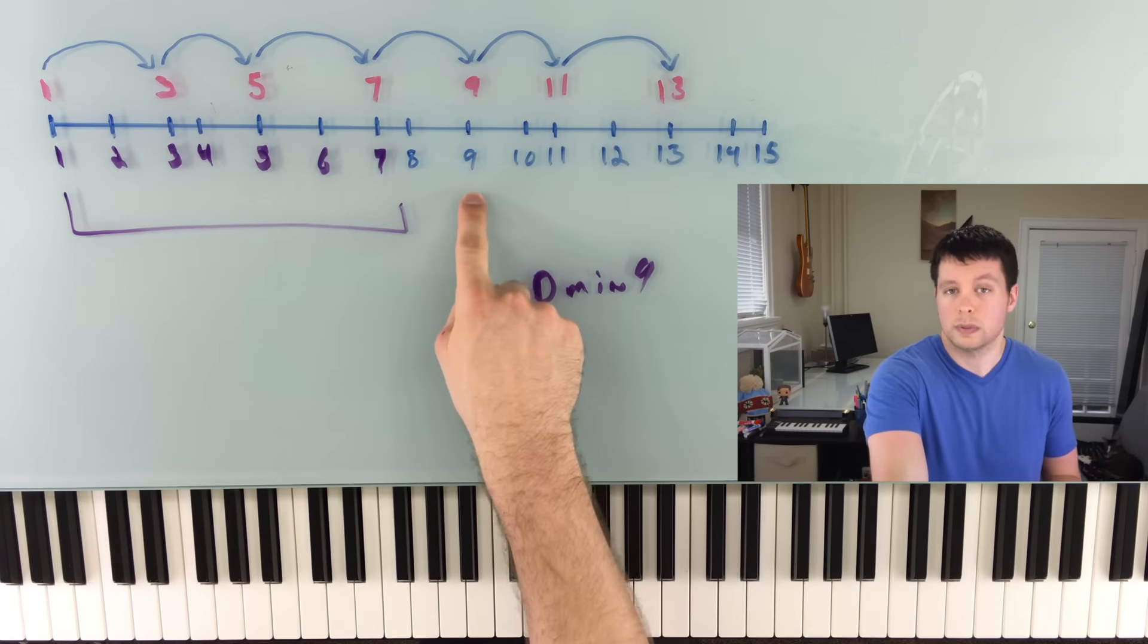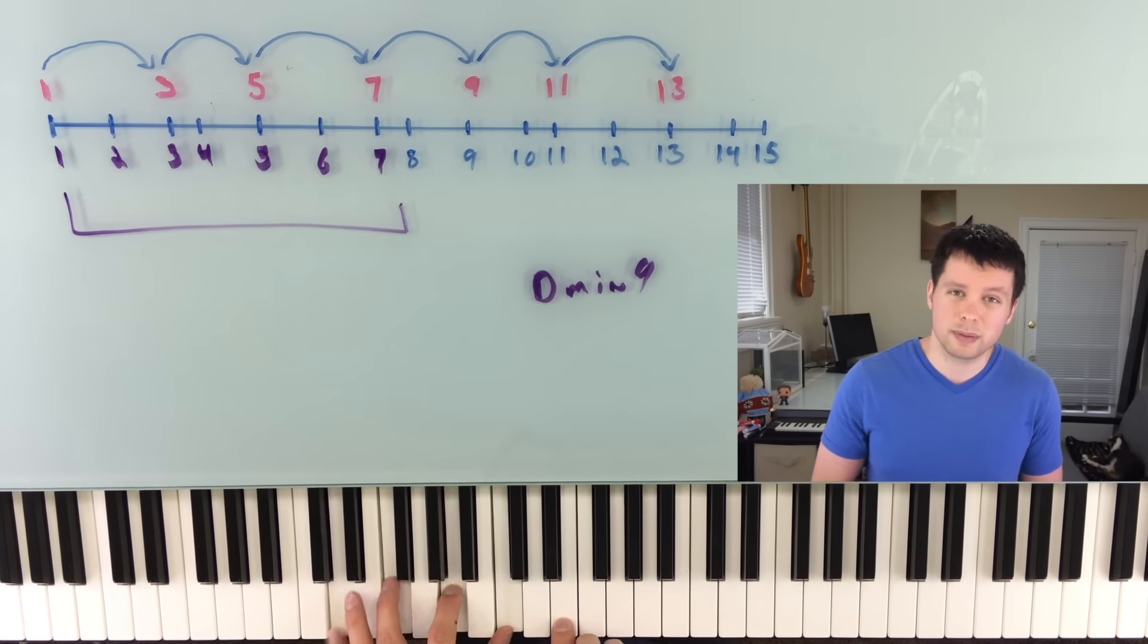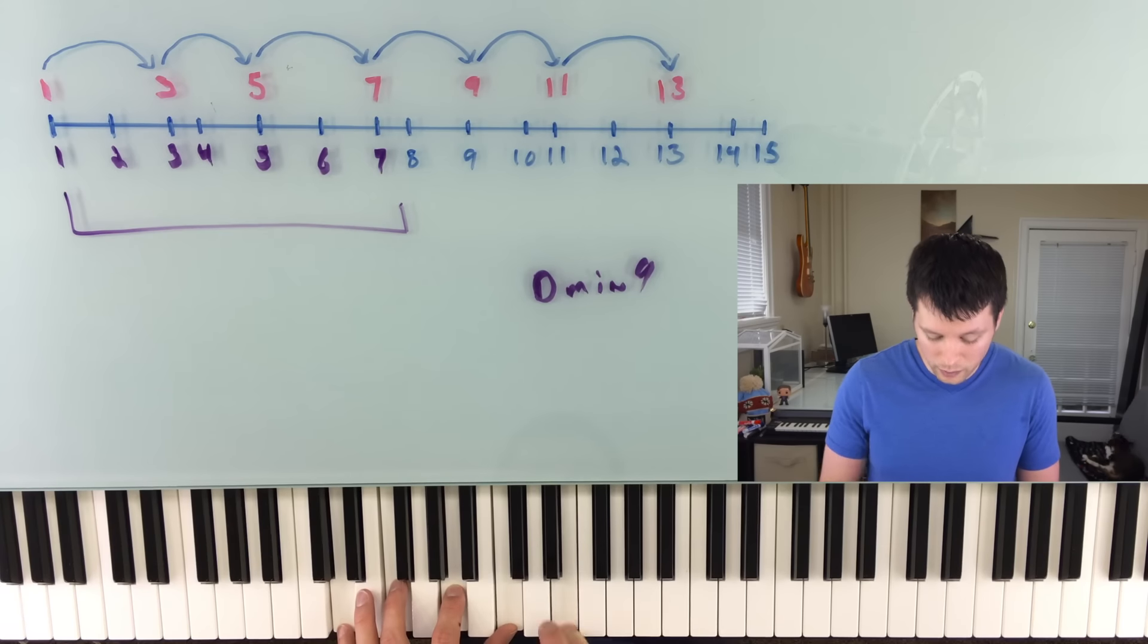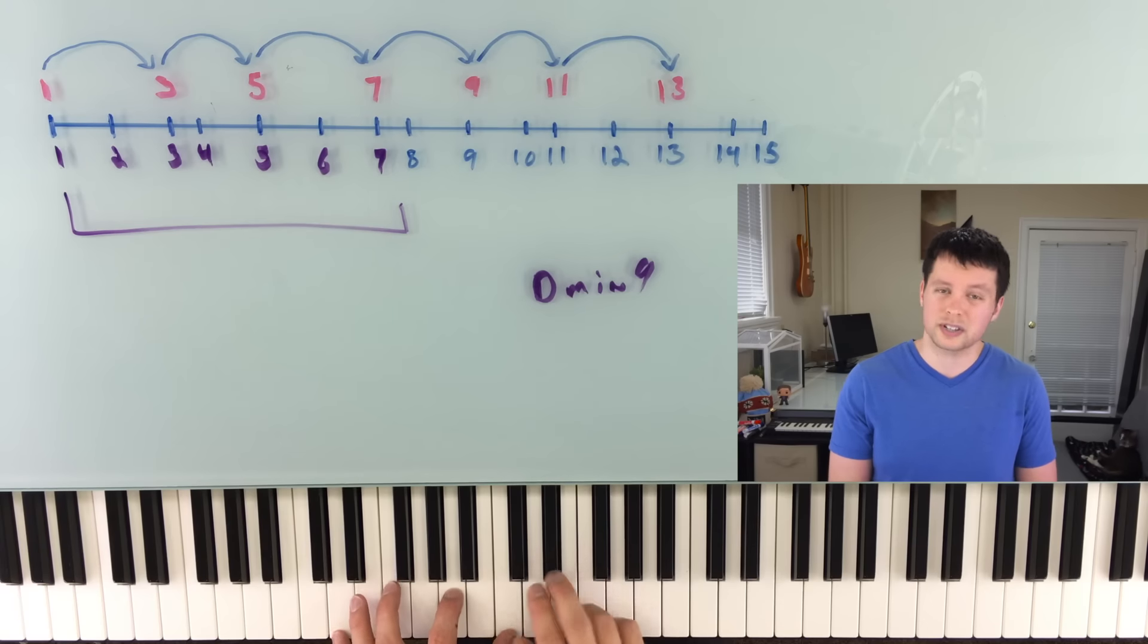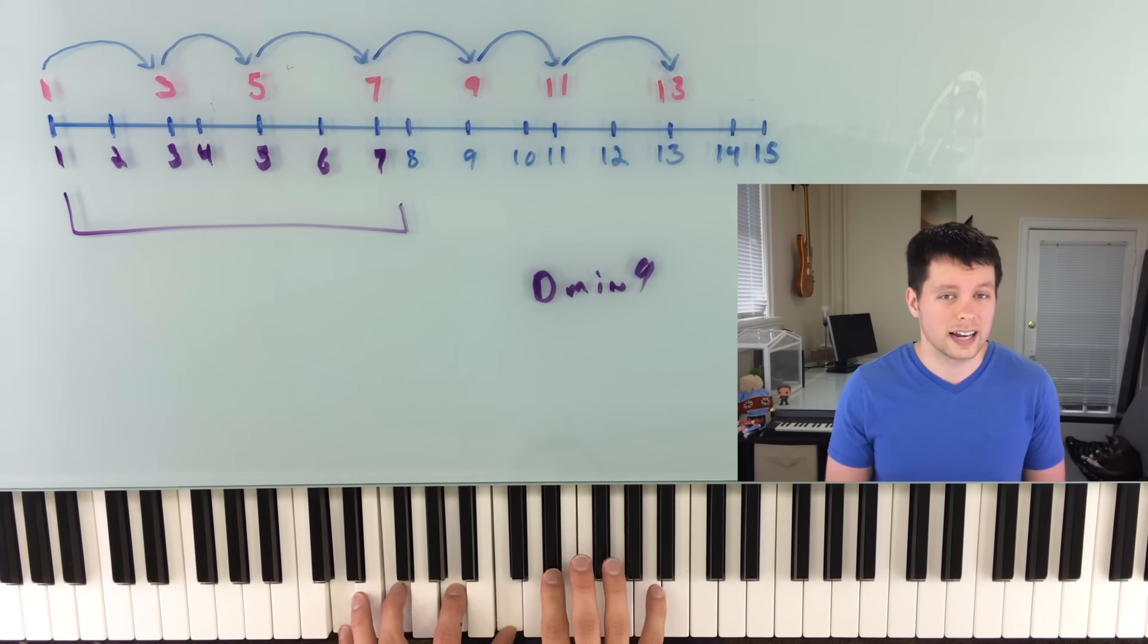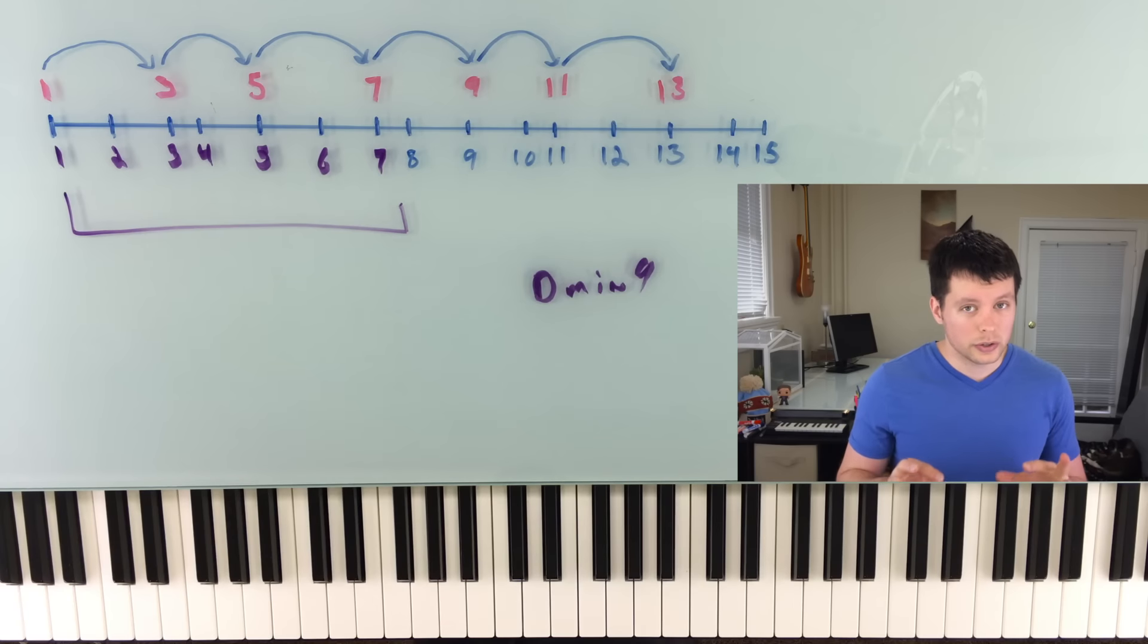Because if I, for example, had a D minor nine chord again, and I wanted to lower the ninth, what would I call it? A D minor minor nine? And it'd be even worse for like an 11th. I'd have a D minor minor minor 11 or whatever. So that doesn't work too well. In the case of the ninth, 11th, and 13th, we just talk about them as being sharp or natural or flat. So a nine would just mean a natural nine. If you want to raise it, be a sharp, lower it, be a flat.